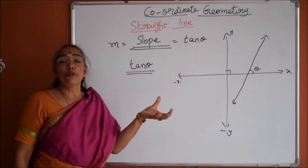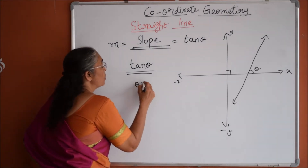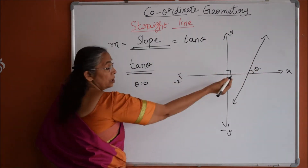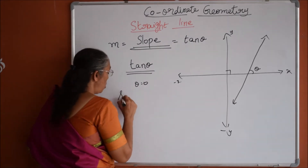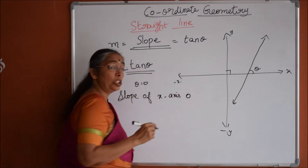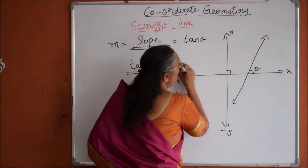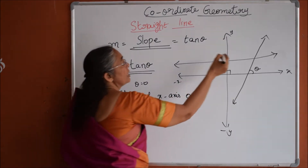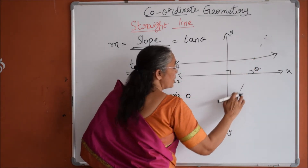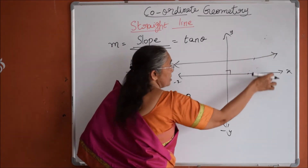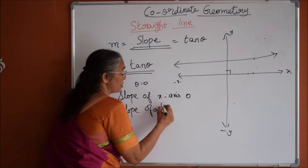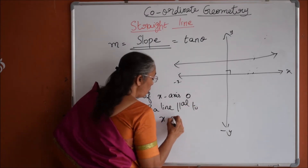Now if theta becomes 0, then this line coincides with the x-axis. So tan 0 is 0, meaning slope is 0. So the slope of the x-axis is 0. Not only that — the slope of a line parallel to the x-axis is also 0, because that line makes no angle with the positive direction of the x-axis. So both the slope of the x-axis and the slope of a line parallel to the x-axis are 0.